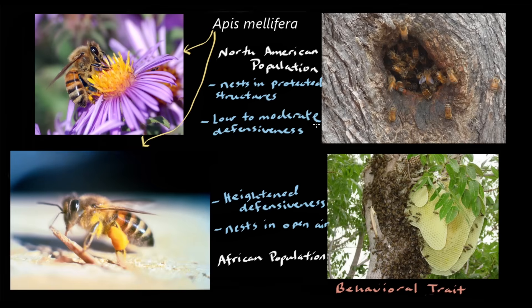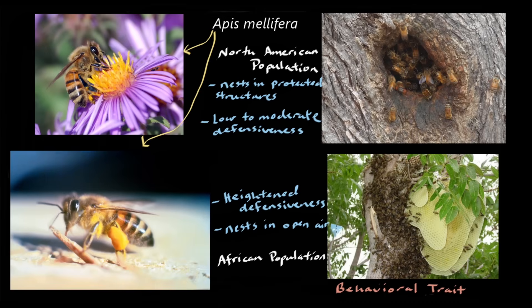The success of honeybees adapted to life in Africa left a lot of people worried that they would be similarly successful in North America and replace the honeybees there. But those concerns ignored the connection between adaptation and the environment. Traits that helped those bees survive in Africa, and even helped them in similar environments found in many regions of tropical South and Central America, were liabilities in much of North America.